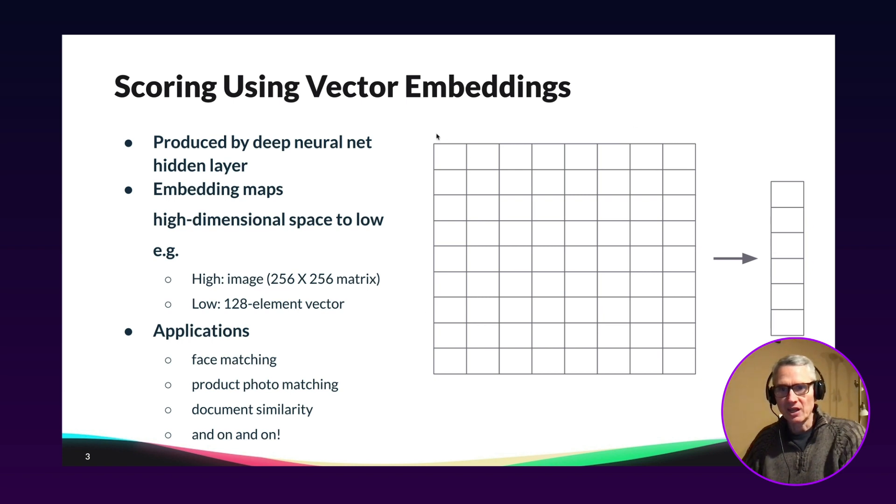So an example might be you've got 256 by 256 matrices representing images. And once you pass them through the neural network, you'll get a 128 element vector that represents the meaning of the original image. And applications of this are things like face matching, product photo matching, similarity of documents, and on and on. There are many different applications to this.